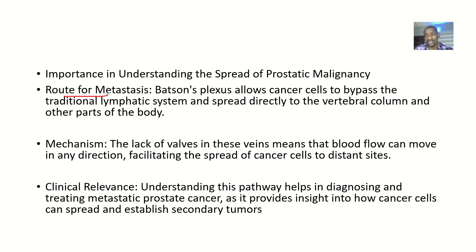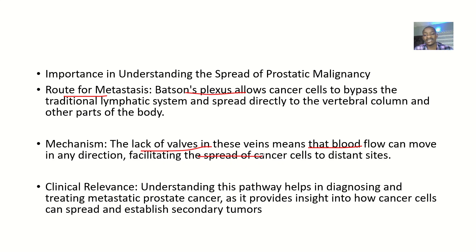Batson's plexus is actually a route for metastasis. It allows cancer cells to bypass the traditional lymphatic system and spread directly to the vertebral column and other parts of the body. The mechanism is facilitated by the lack of valves in the veins, meaning blood flow can move in any direction, which facilitates the spread of cancer cells to distant sites.